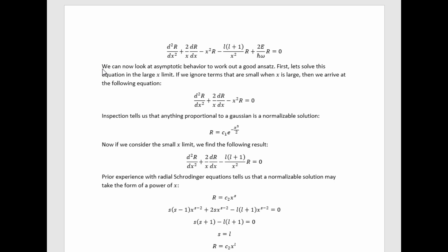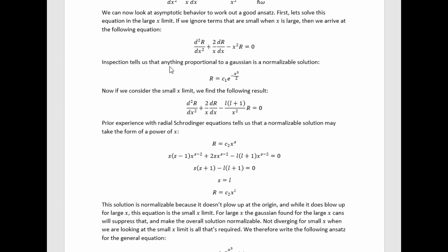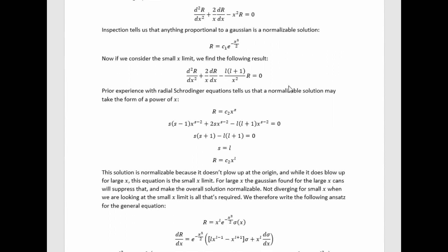Now, as is typical in this type of problem, we can now look at asymptotic behavior to work out a good ansatz. So specifically what we're going to do is we're going to take the large x and small x limits of this radial equation here, solve it in those cases, and use that to get the asymptotic behavior, which we can then stick as factors in a new ansatz. The idea is that if we get this asymptotic behavior out, then the remainder of the solution will just be polynomials, and we can find those by playing around with power series. So this is really classic ordinary differential equation solving. First, let's solve this equation in the large x limit. If we ignore terms that are small when x is large, then we arrive at this equation here. Inspection tells us that anything proportional to the Gaussian is a normalizable solution. We arrive at this Gaussian asymptotic behavior, which is quite interesting.